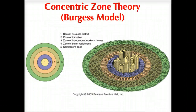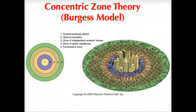We'll start with the Burgess model, or the concentric zone model. It highlights very traditional concentric rings around the central business district. As we look at the density and the gravity that brings activity in, it supports Christaller's central place theory. You have the center of the CBD followed by several rings that highlight the changing real estate value and density. Generally speaking, that first ring is the central business district.